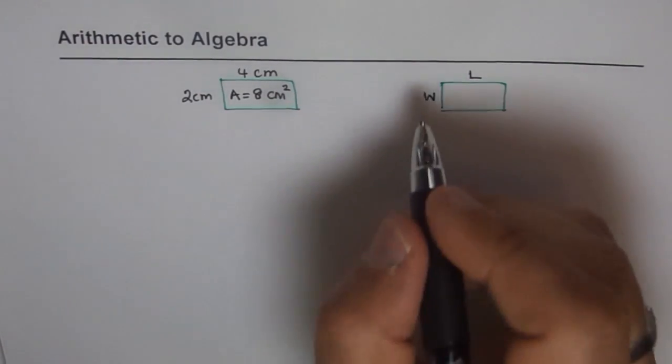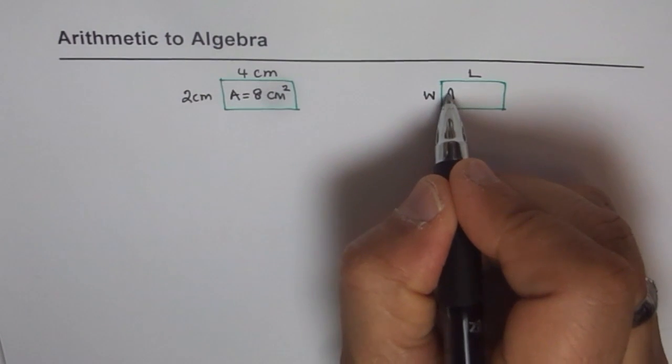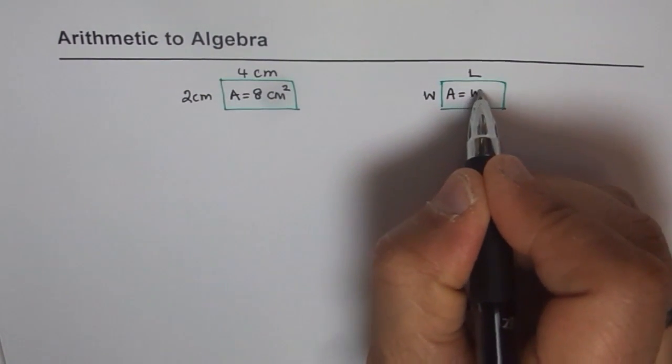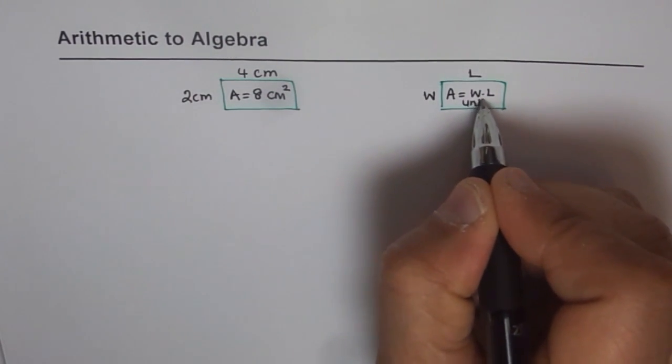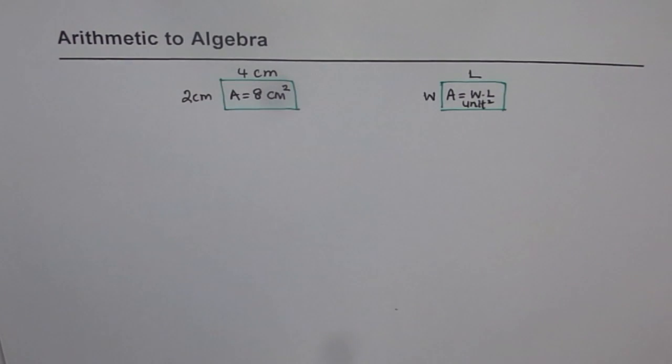And how about this area? This area is W times L and unit square. We don't know what the unit is. We even don't know what length is and what width is. But we can say whatever it is, just multiply them and get the area.